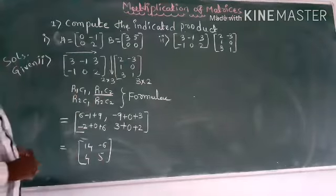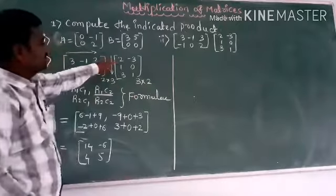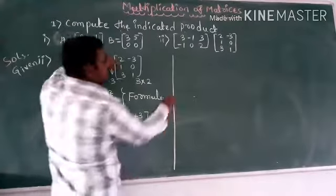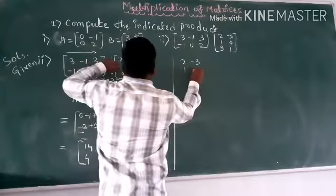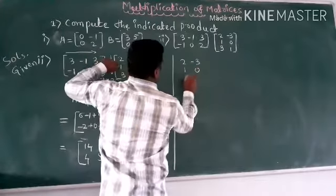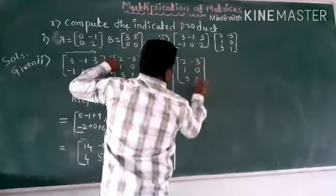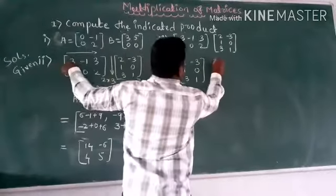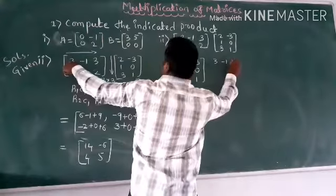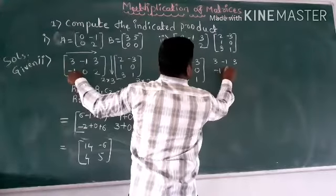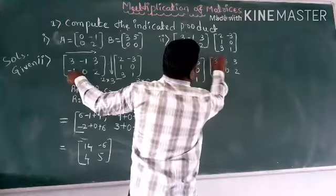For the second part, we define BA. Matrix B is [2, -3, 1; 0, 3, 1] and A is [3, -1, 0]ᵀ with entries 3, -1, 0, 2. We will now compute BA.